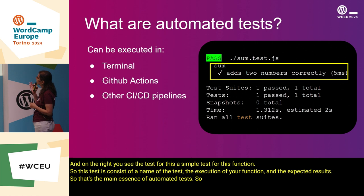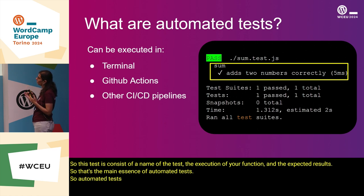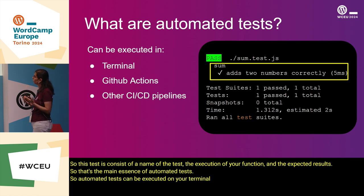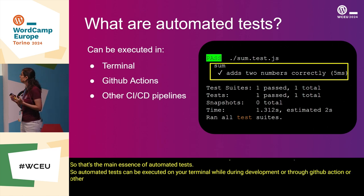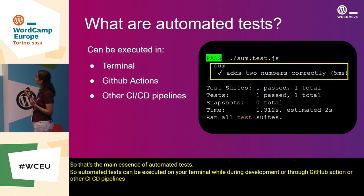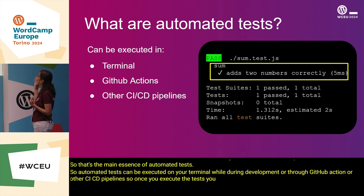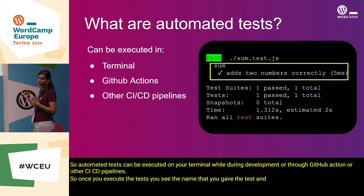Automated tests can be executed on your terminal during development, or through GitHub Actions or other CI/CD pipelines. Once you execute the tests, you'll see the name that you gave the test and whether it passed or didn't pass.